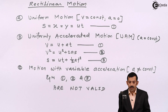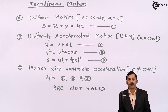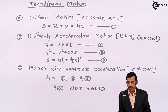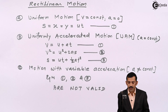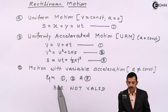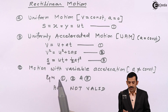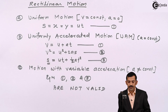So there are three types of motions: uniform motion, uniformly accelerated motion, and motion with variable acceleration. In uniform and uniformly accelerated motion, a very important term is displacement, given by S.